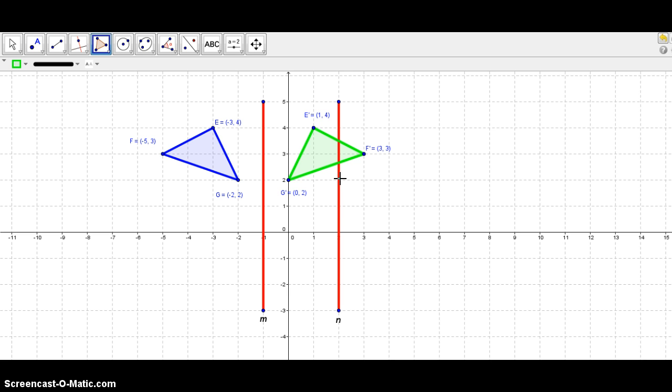Each point we will find out how far it is from line N. Okay, so let's start with point E prime, and that is one unit to the left of line M.